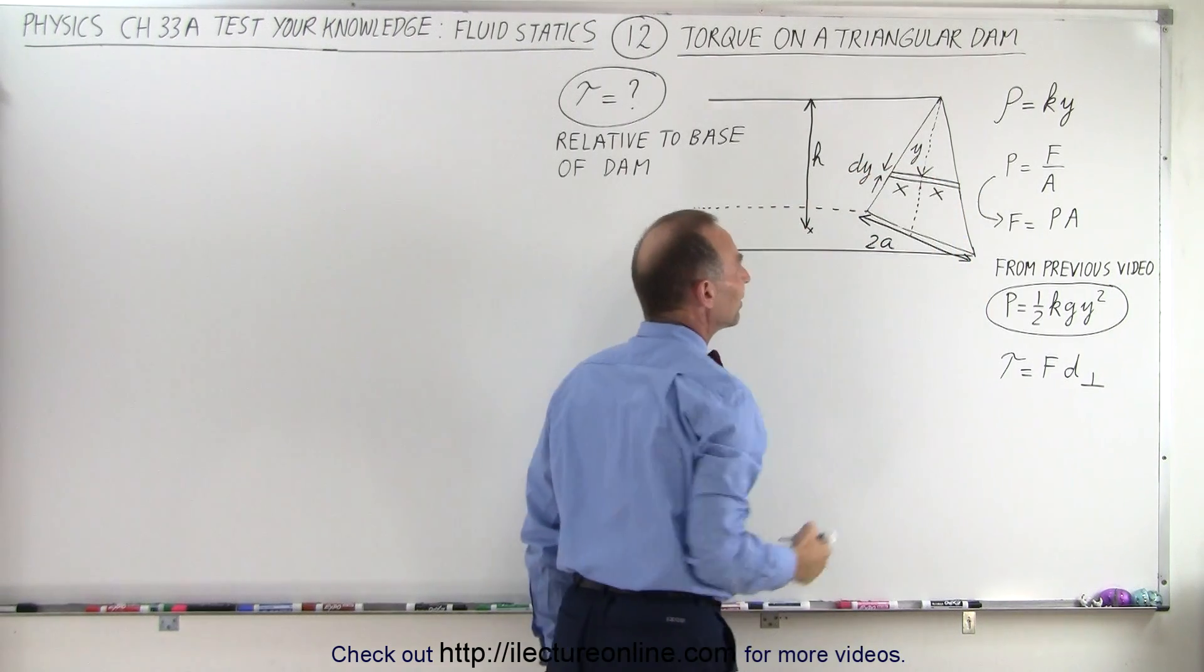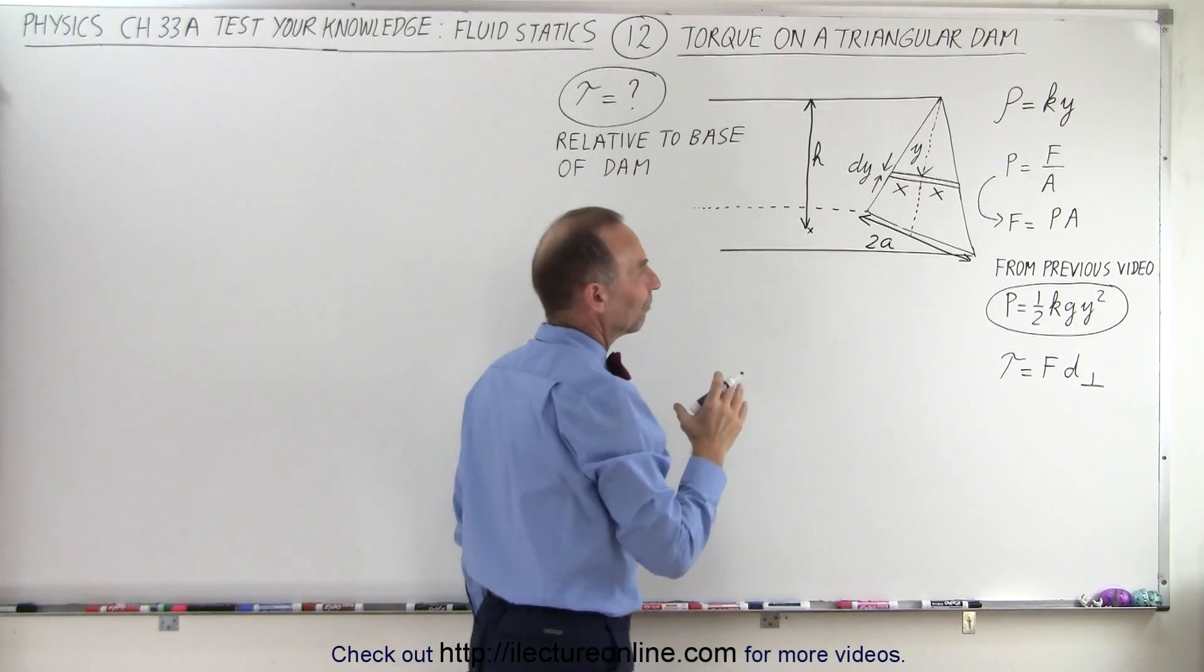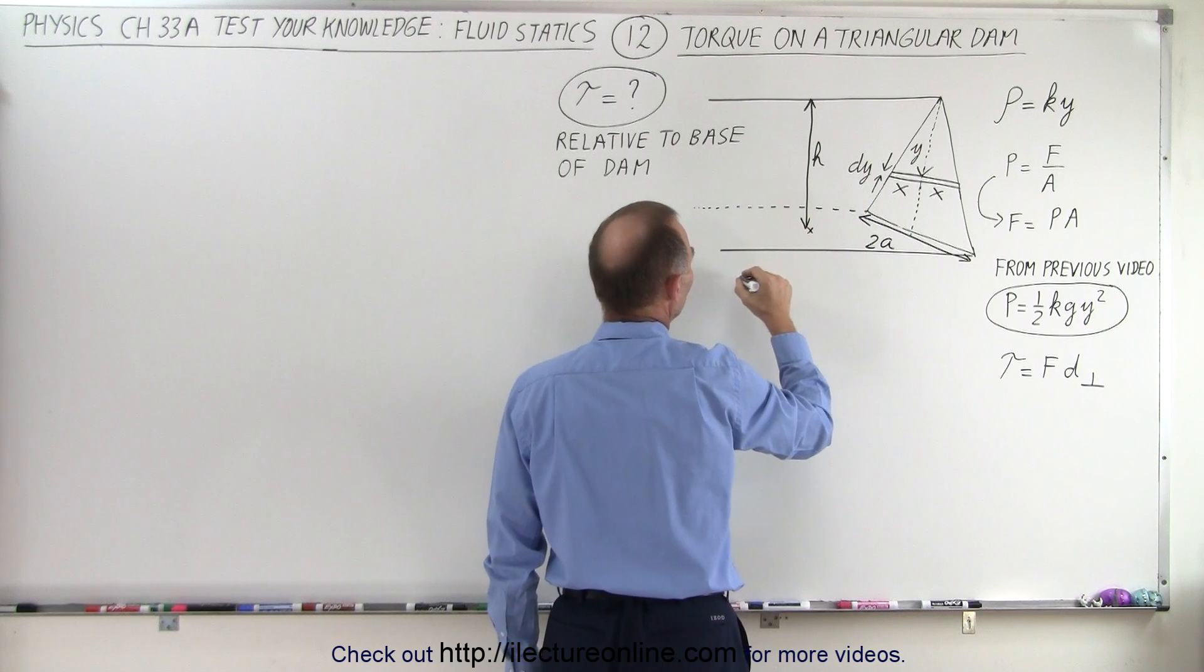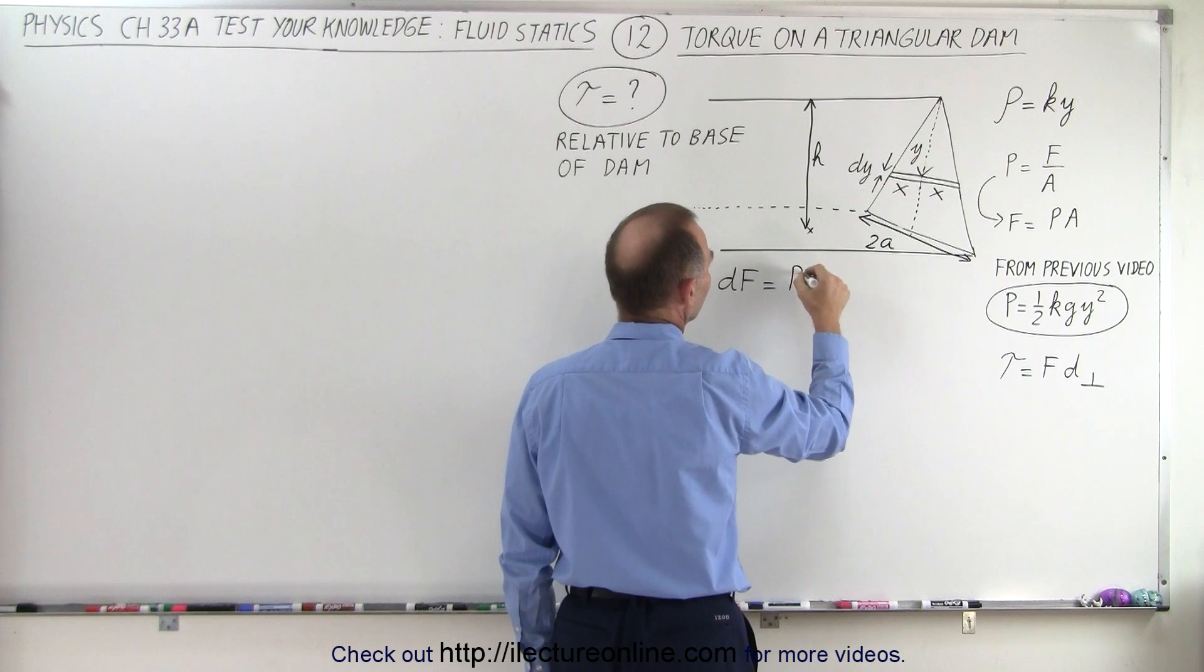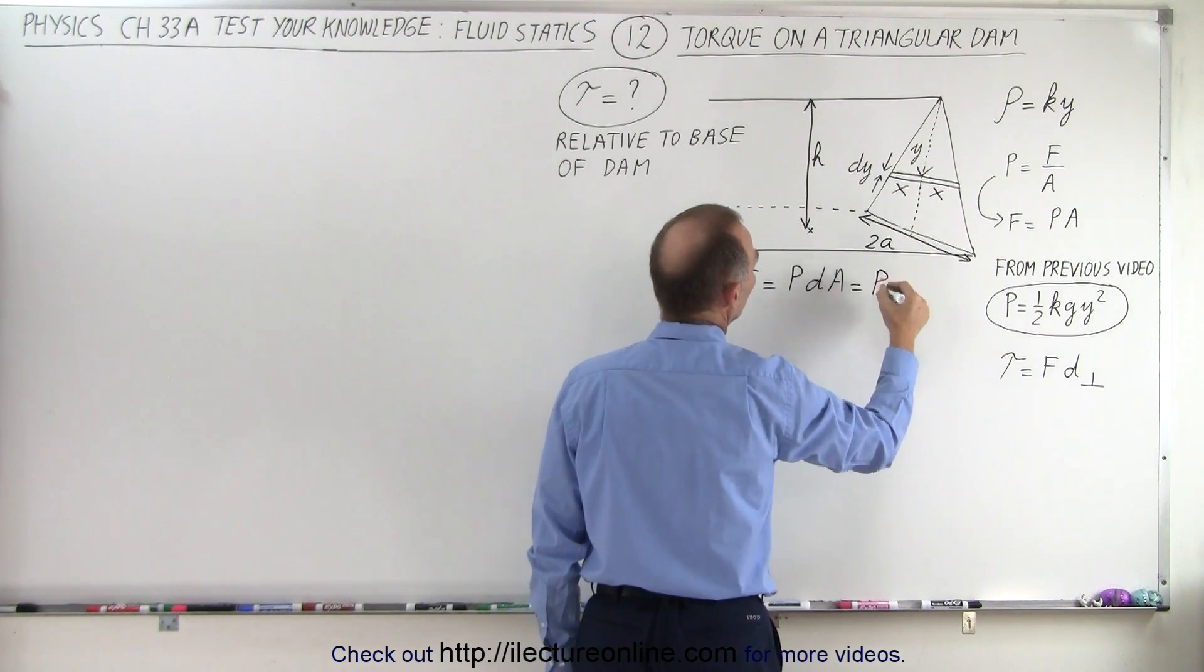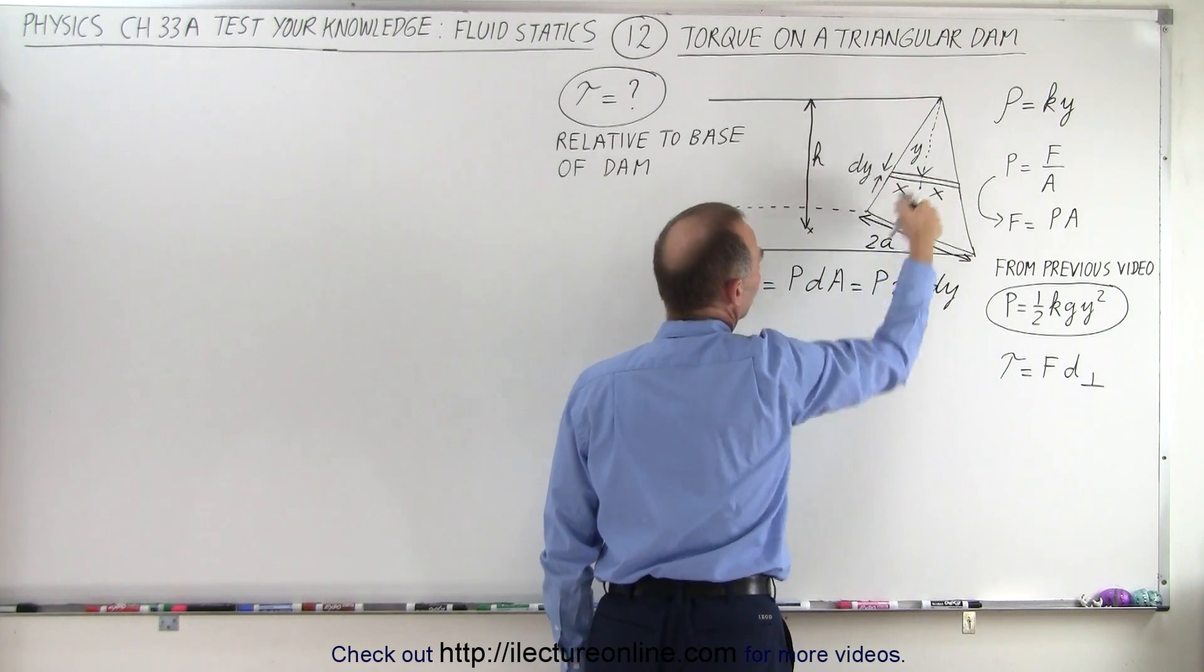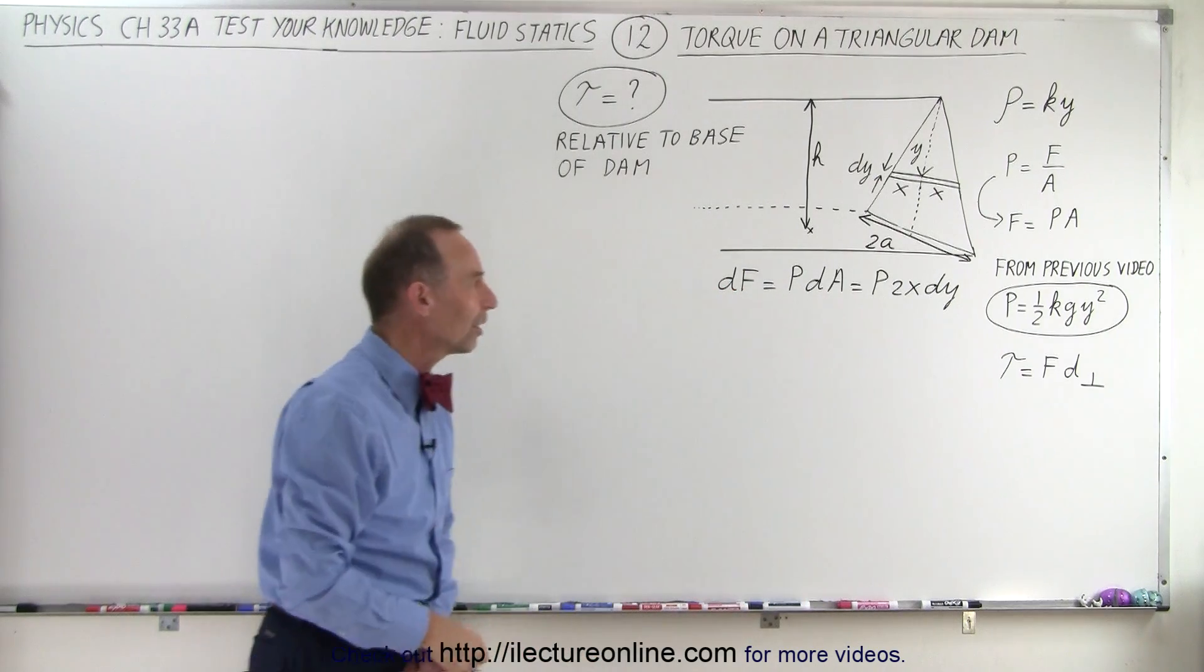So now we have a small area, dA, which is 2x times dy, and from that we should be able to find the force on there. Let's call the force dF, and the force, of course, is going to be equal to the pressure at that time times dA, and dA is going to be equal to, that would be pressure times 2x times dy. So that would be the area of that little strip, dA, 2x dy, and then we have the pressure, which is 1 half kg y squared.